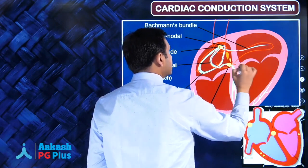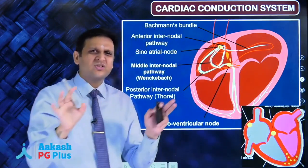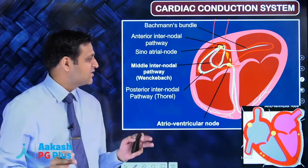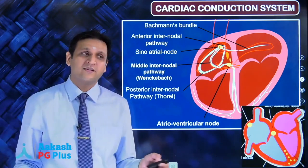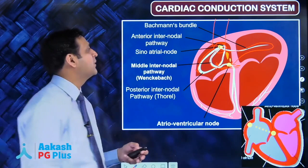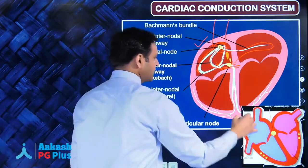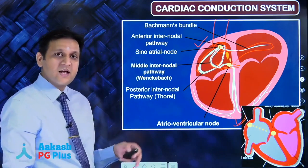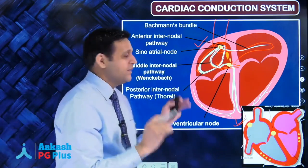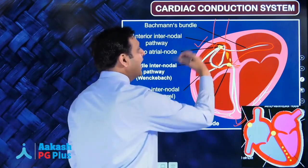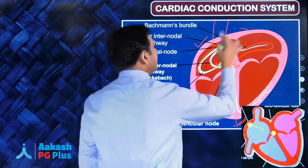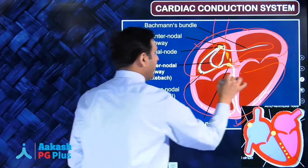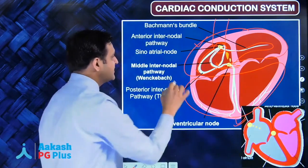The best way to understand the cardiac conduction system is that it's like a highway - the national highway, say from Jammu Kashmir to Kanyakumari between two states. In the heart you have two chambers, the atria (upper chamber) and the ventricle.